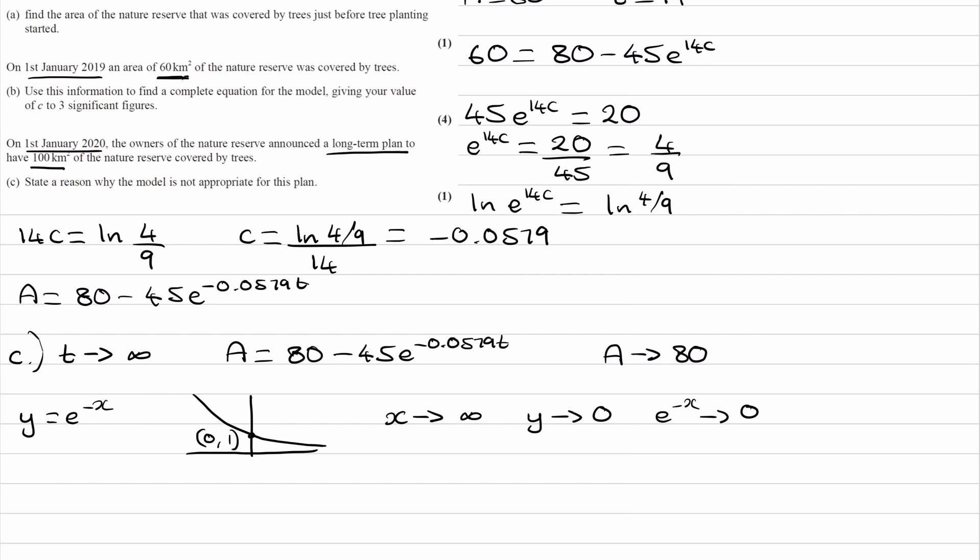From our equation, as T approaches infinity, e^(-0.0579T) approaches 0. Therefore, the area will approach 80 - 45 × 0, or in other words, approach 80.